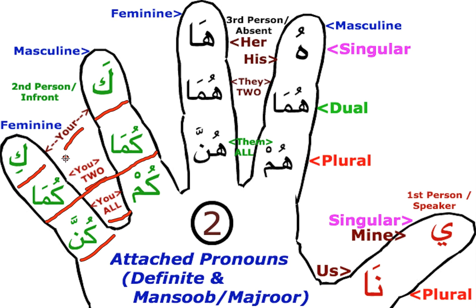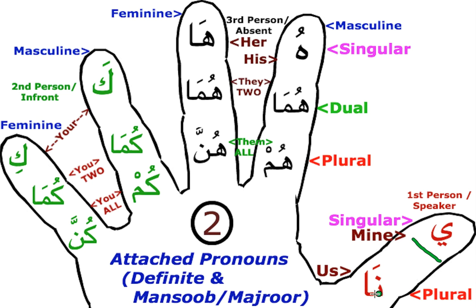I urge you to remember the English meanings as well. Here it is not 'you' — here it is 'your': your, you two, you all. Moving to the first person, it will be 'ya' — for the tune's sake we will say 'yi' — and for the plural it will be 'na.' So for singular it is 'yi,' and in the detached pronouns we said 'I' or 'my,' but here in the attached pronouns it will be 'mine' — 'yi' — and 'na' for 'our.'